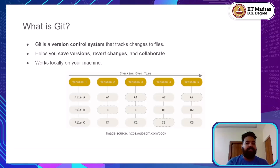So let's begin with the basics — what exactly is Git? Git is a version control system. Simply put, a version control system is a tool that helps developers track changes made to files over time. With Git, you can save versions of your work, go back and revert changes if something breaks, and collaborate with others without worrying about overwriting each other's work.